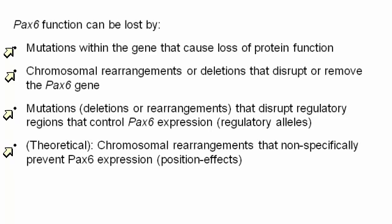Chromosomal rearrangements that disrupt regulatory regions — the third bullet point — can be thought of as a master circuit breaker in your house. If the master circuit breaker is broken, then the gene can never turn on, just as if no power was delivered to your house. This other example we know exists in certain genetic disorders like thalassemia and certain blood disorders, so we know it can occur in a person, but we can't show that it occurs for Pax6.